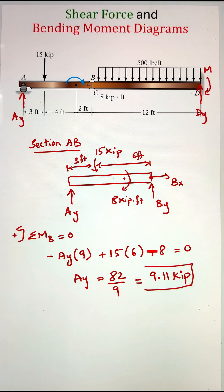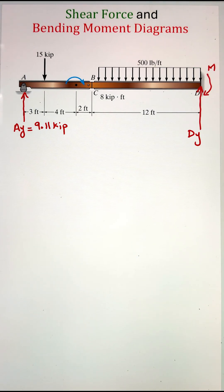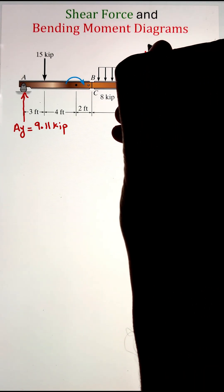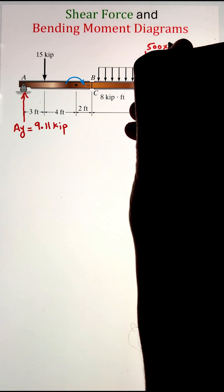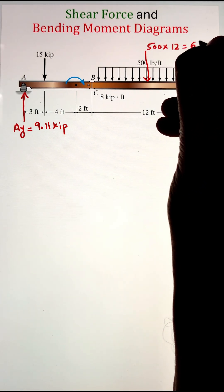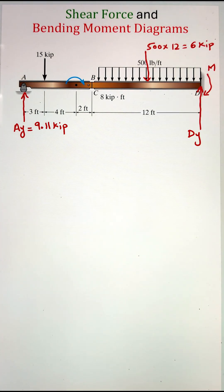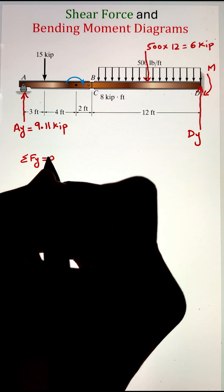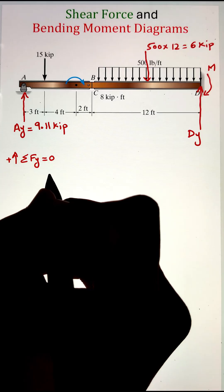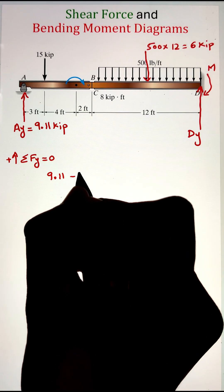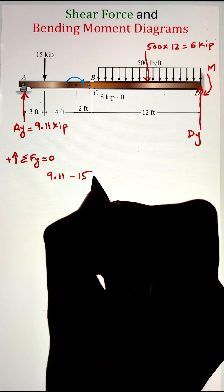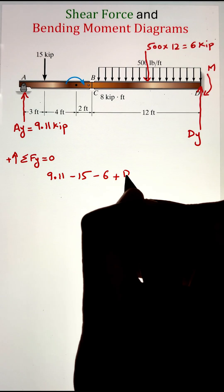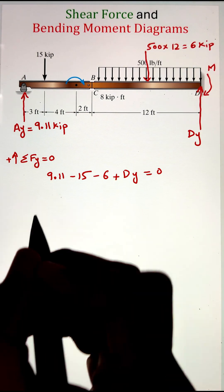Next we figure out the support reactions at point D by considering the whole beam. The distributed loading of 500 pounds per foot is converted into a point load by multiplying 500 pounds per foot by 12 feet, giving a 6 kilopound load acting at the middle of that distributed loading. Applying the equilibrium equation — summation of forces in the Y direction equals zero — gives DY equal to 11.89 kilopounds.